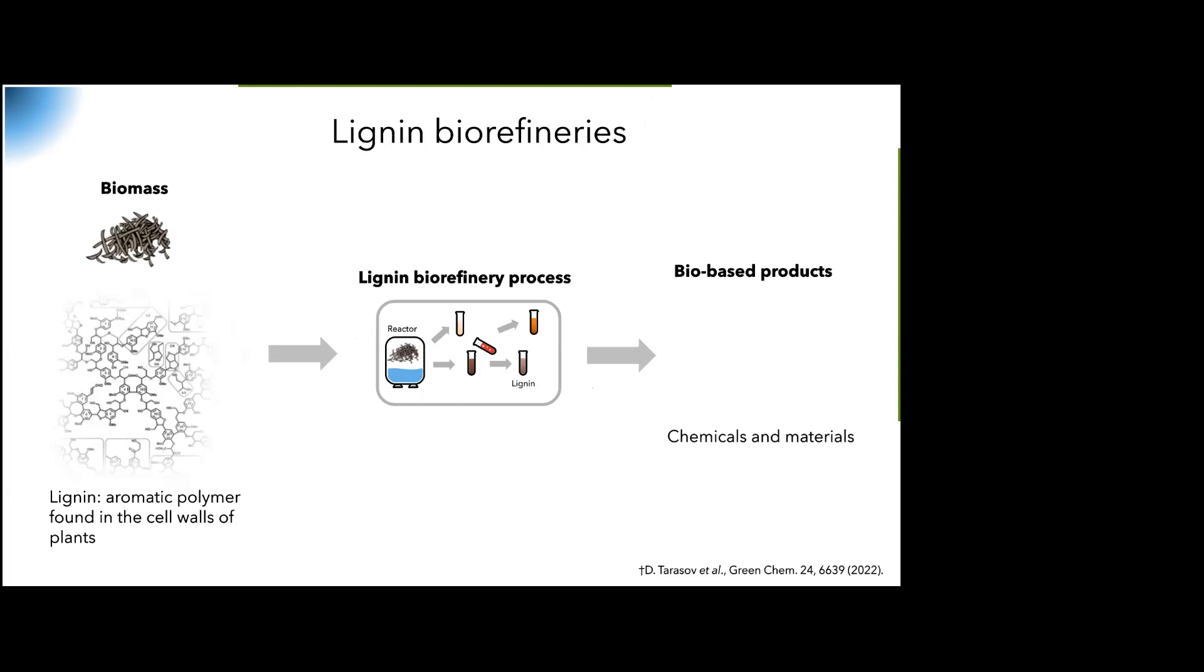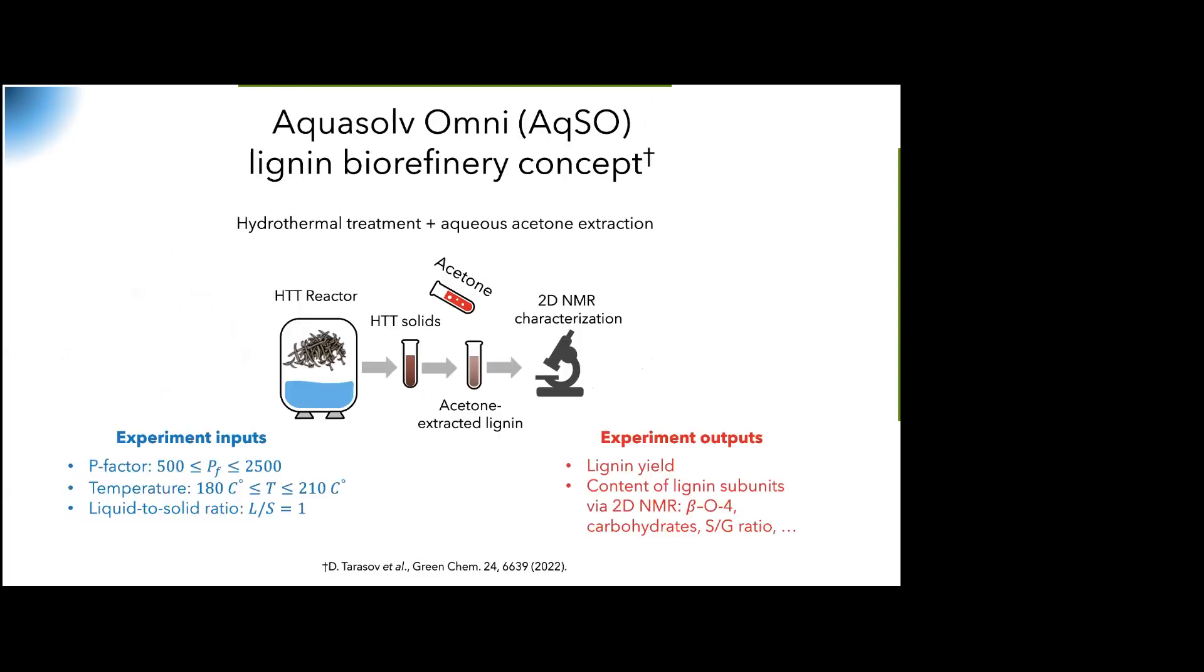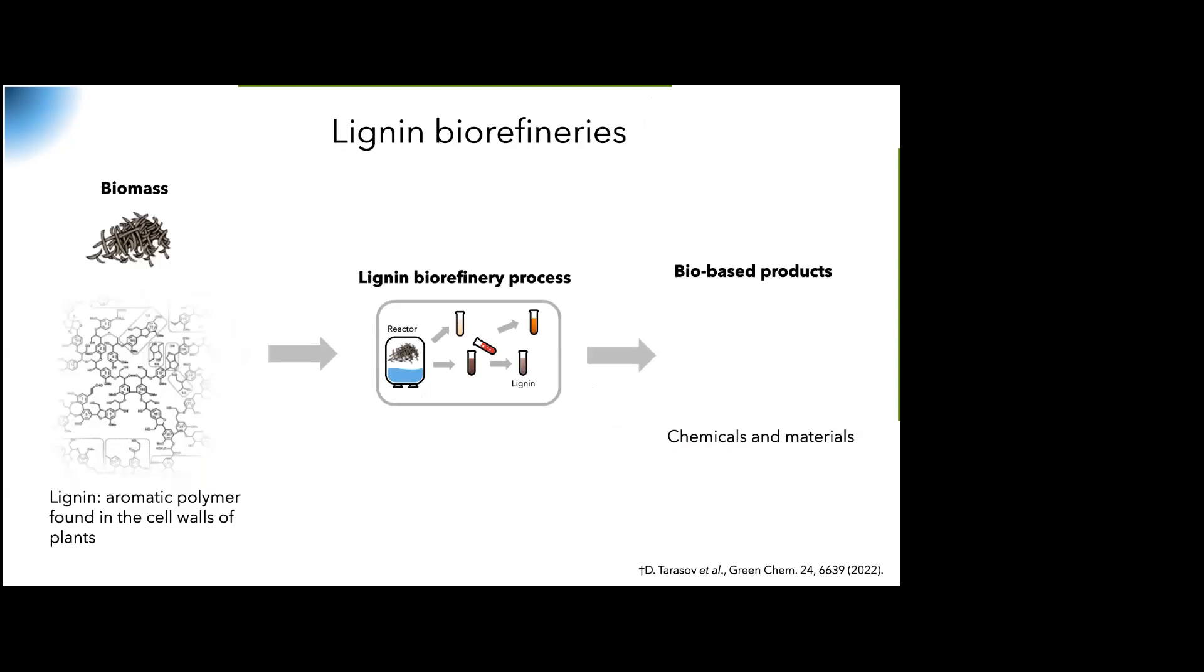We take biomass which contains lignin, wood typically, and we feed it through some biorefinery process to be defined. In the end, hopefully we get some biobased products - there's an image missing here. Imagine a pretty image of a biobased product. In the end, we hopefully get some chemicals or materials or something else that is hopefully more sustainable. This is what a lignin biorefinery does in general. We will study how we can use Bayesian optimization to optimize a specific lignin biorefinery.